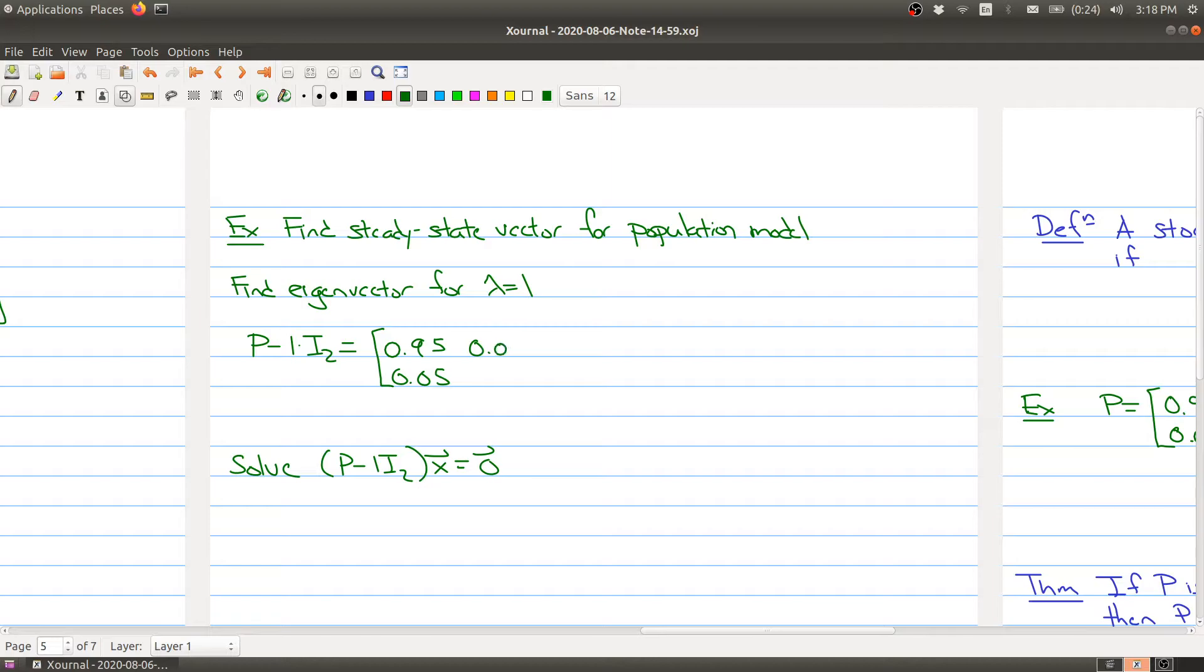So here's our matrix P. And we're going to subtract one minus the identity. So we're just subtracting the identity matrix. And we're getting the values negative 0.05, 0.3, 0.05 and minus 0.03.